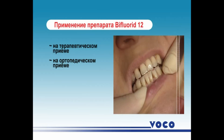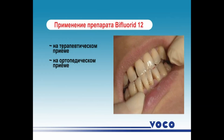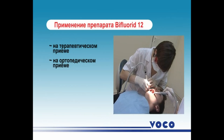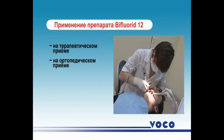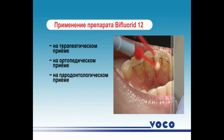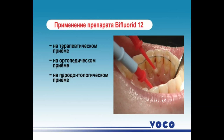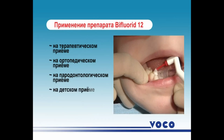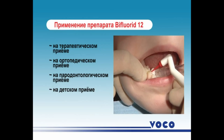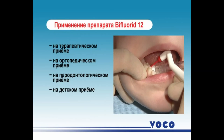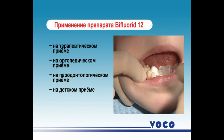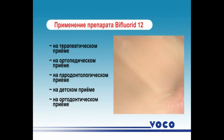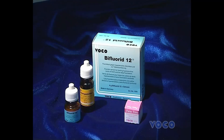Indications for B-fluorid 12 include: caries in the stain stage, fluid caries, tooth hyperesthesia, wedge-shaped defects, processing restorations after grinding to prevent post-filling pains, after teeth preparation at the orthopedic appointment, after grinding teeth to protect the pulp, when fixing clamp-shell structures, and at periodontal appointments after professional hygiene or curation of periodontal pockets to protect the necks of the teeth with cervical hyperesthesia.